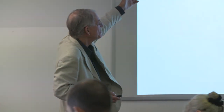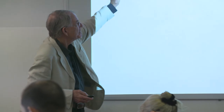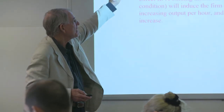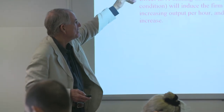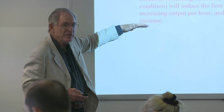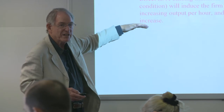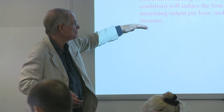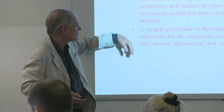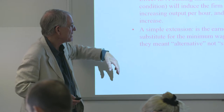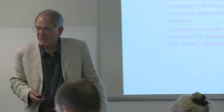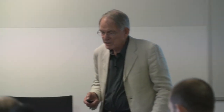To summarize: the monopsony firm can hire more after the imposition of a minimum wage. A binding minimum wage will mean there's an effort increase, which will partially offset the cost. We can also extend it to the EITC.